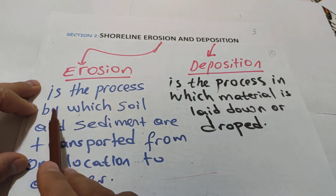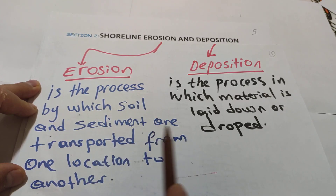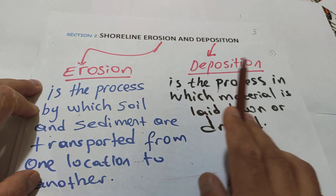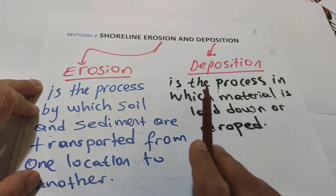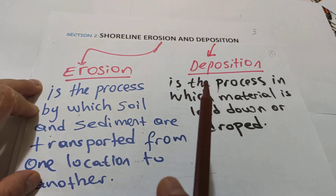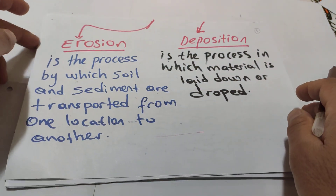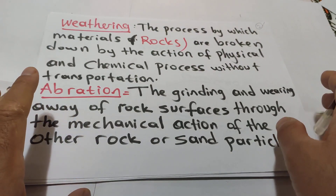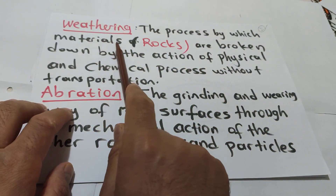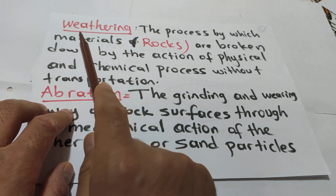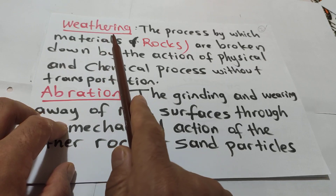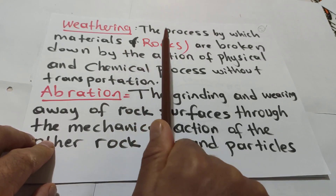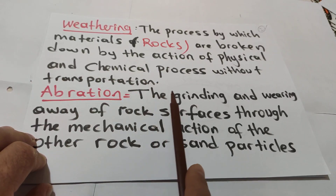Erosion is the process by which soil and sediment are transported from one location to another. Deposition is the process in which material is laid down or dropped. We also need to recall weathering from Chapter 6: weathering is the process by which rock materials are broken down by physical and chemical processes without transportation.